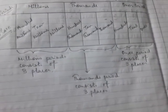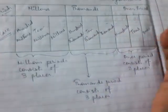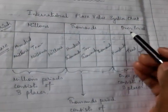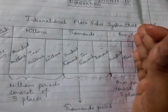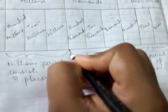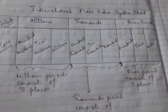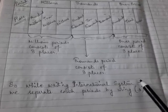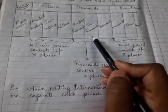Most importantly, each period has a comma in between — each period is separated by a comma. We place a comma between the ones period and thousands period, and another comma between the thousands period and millions period. While writing in the international system, we separate each period by using a comma.